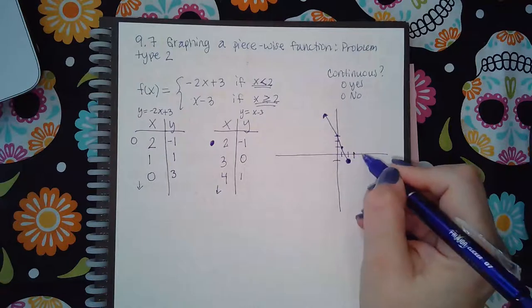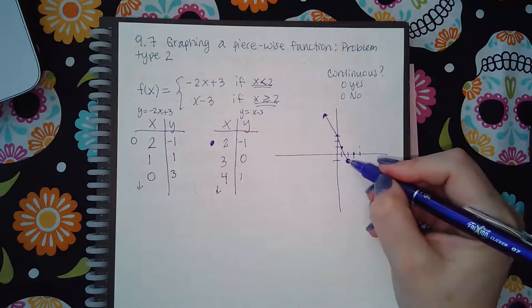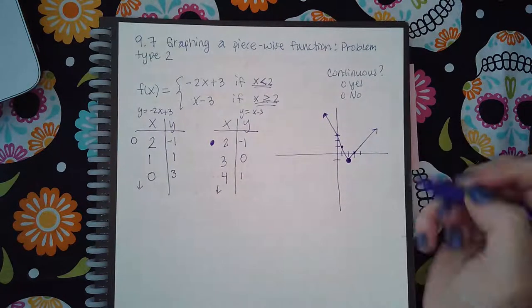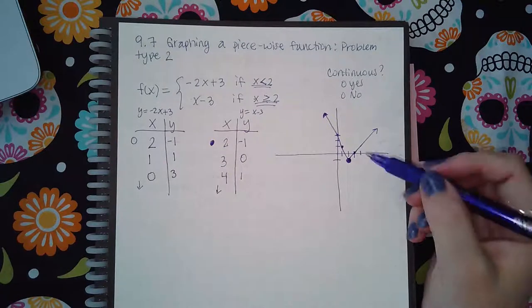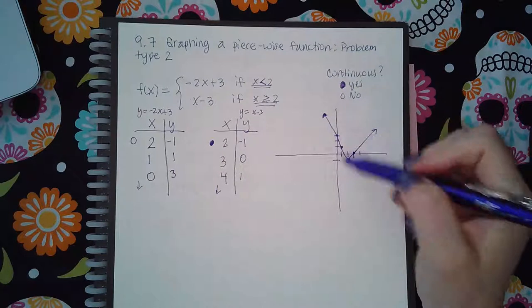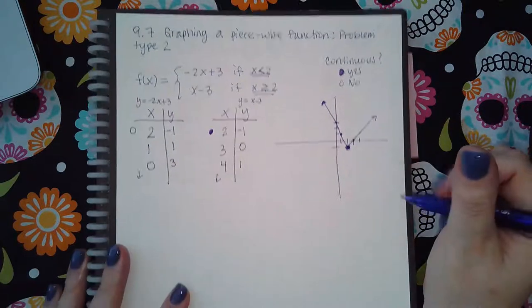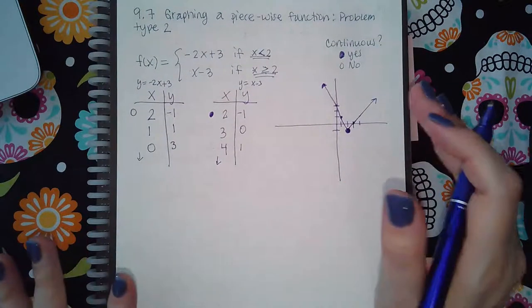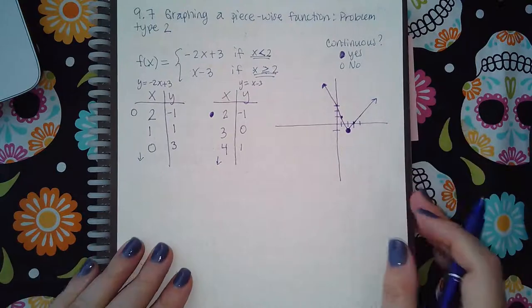This is continuous, I would say yes, because there's no break in the graph. But let's say for instance you draw a picture - let me just make sure I don't have one - oh I guess I have problem type 3. But if these two don't connect, then the graph is going to be not continuous.